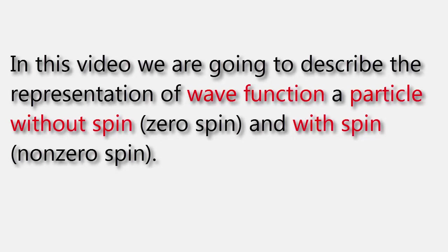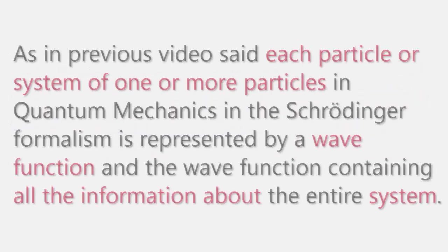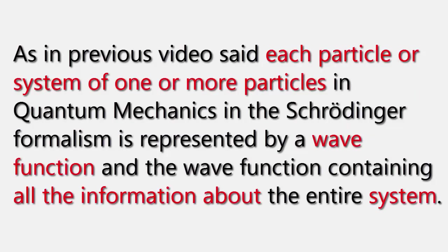In this video we are going to describe the representation of the wave function for a particle without spin and with spin. Each particle or system of one or more particles in quantum mechanics in the Schrödinger formalism is represented by a wave function, and the wave function contains all the information about the entire system.